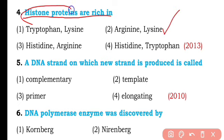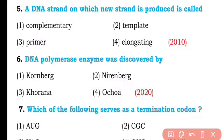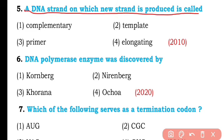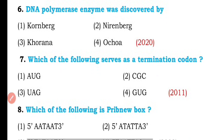Histone proteins have basic amino acids — arginine as well as lysine. Question number five. A DNA strand on which a new strand is produced is called complementary, template, primer, or elongating? So the correct answer is option two — it is known as the template strand.